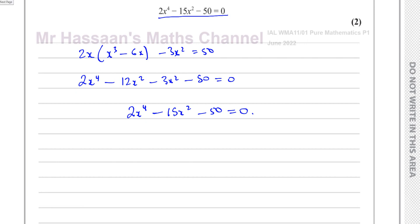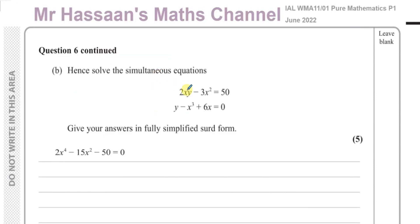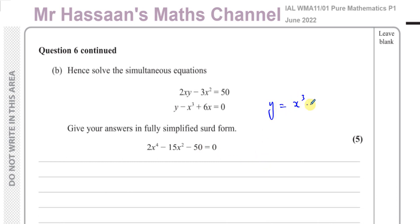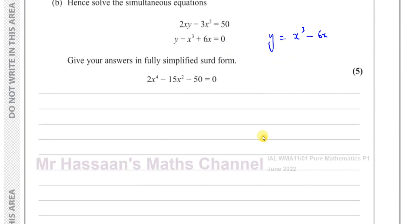Now moving on to part B, which asks us to solve this equation and find the values of x satisfying both equations. It says 'hence solve the simultaneous equation.' They've already given us this equation, so even if you couldn't do part A, you can still do part B. Remember, we said y equals x cubed minus 6x — that will come in useful later.